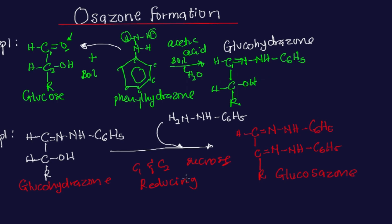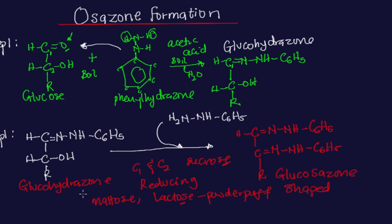Sucrose does not undergo the formation of Osazone because it is not a reducing sugar. But disaccharides like maltose — they are reducing sugars and they form Osazone. Lactose also forms Osazone, but its Osazone has a powder puff shape. In the case of lactose, which is also listed as a mixed sugar, it has a sunflower shape for its Osazone formation. They form Osazone because they are reducing sugars.